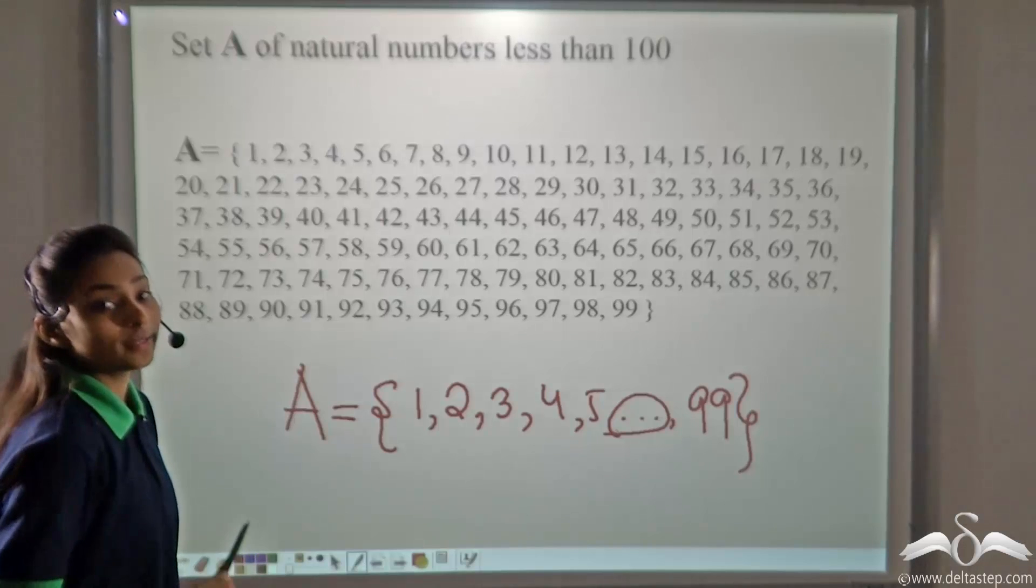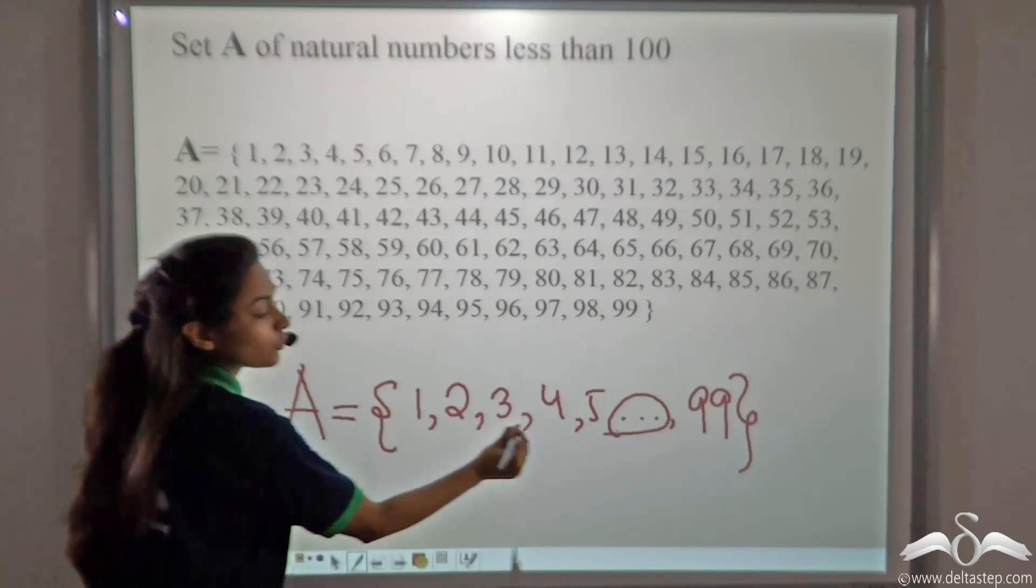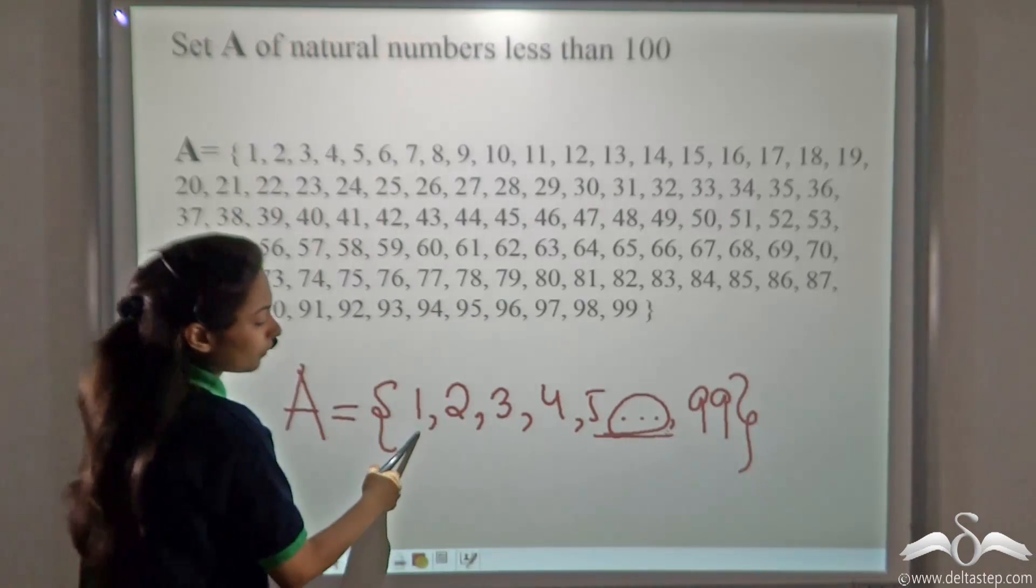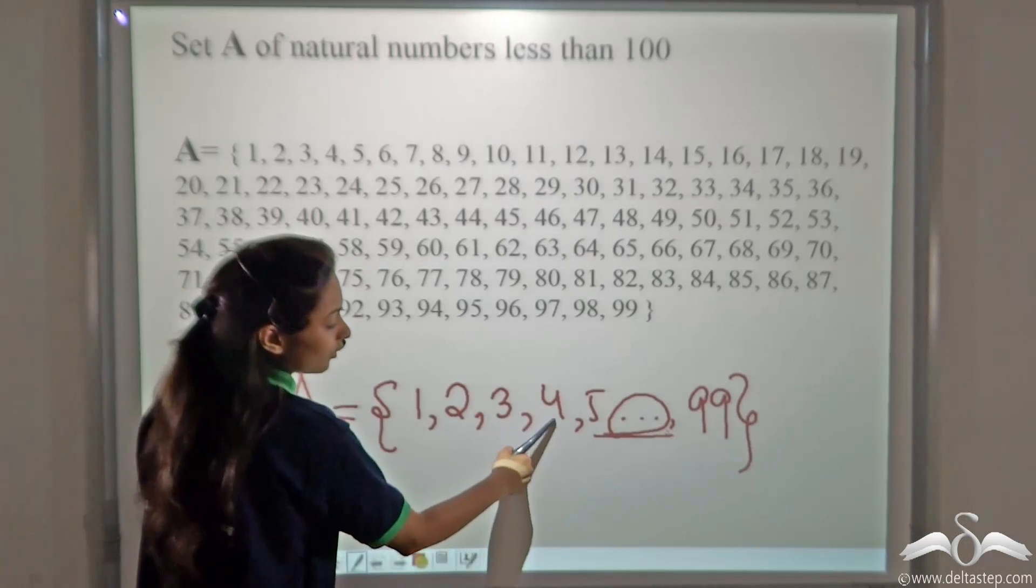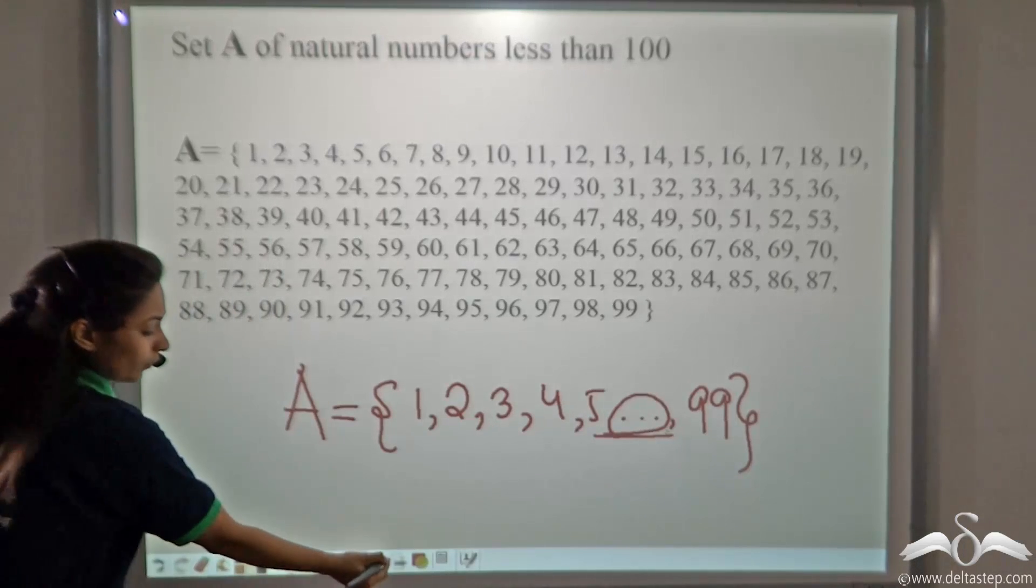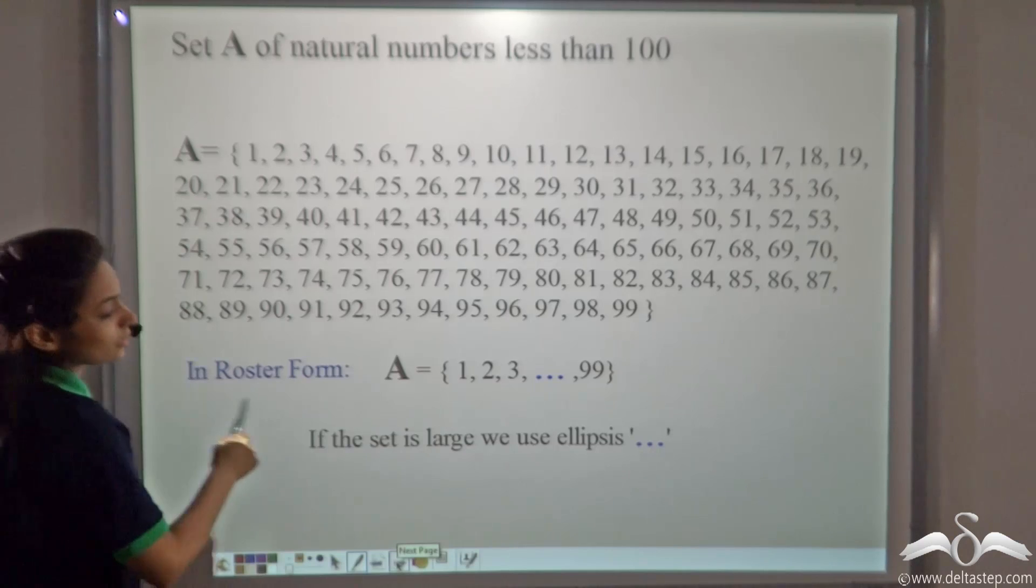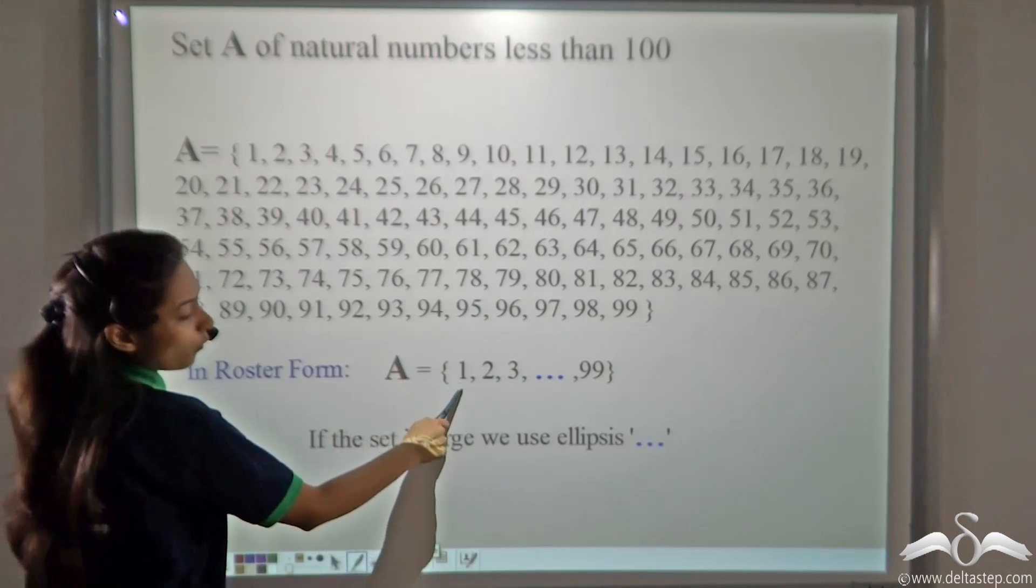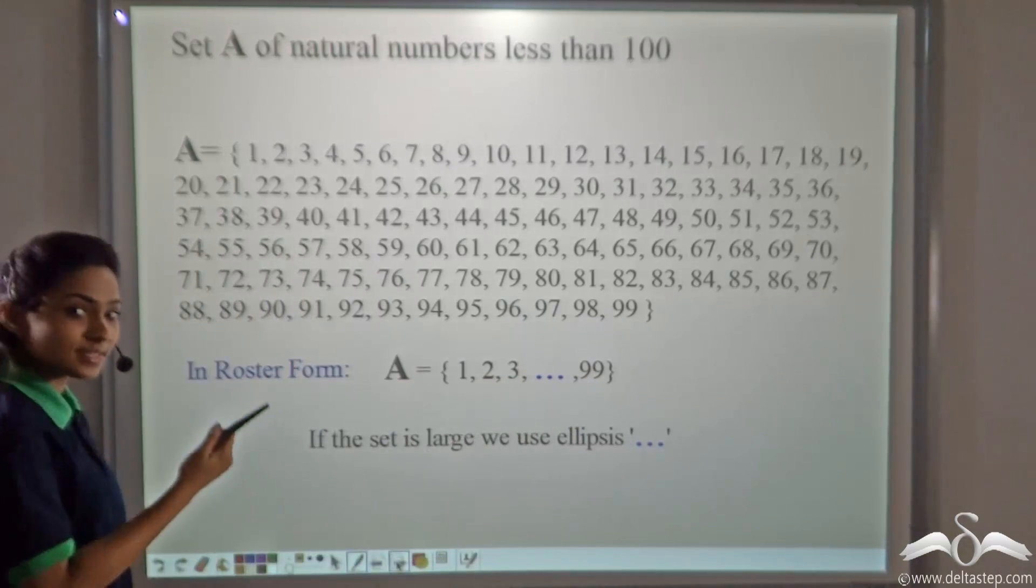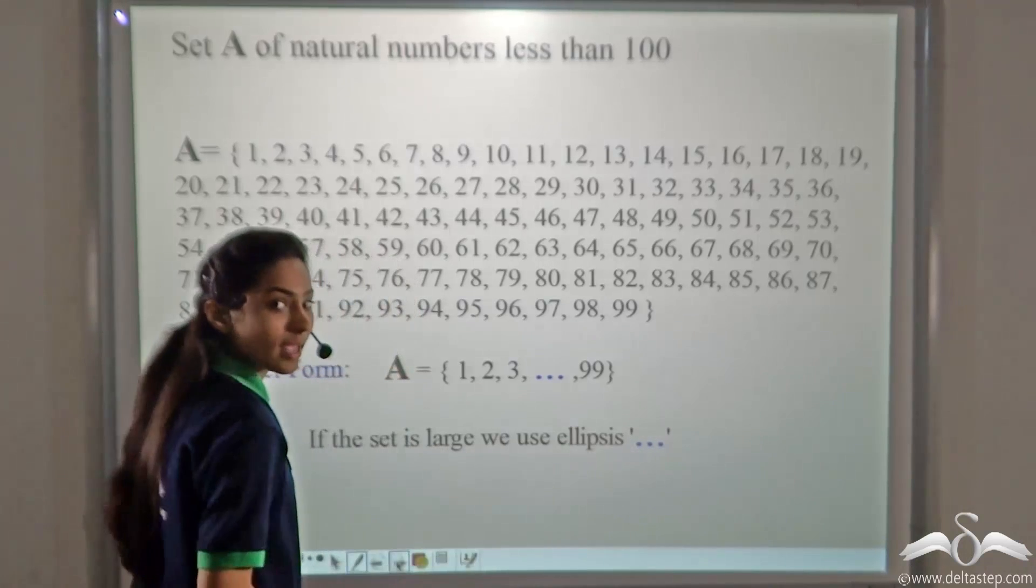These dots are called ellipses. Ellipses means continue on or so on. By using these three dots, you can say in your answer that the numbers start from 1, 2, 3, 4, 5 and move on or so on till 99. So, in roster form, you can write this set in this short form where A will be 1, 2, 3 and so on till 99. If the sets are large, you can use this ellipses. These three dots are called ellipses.